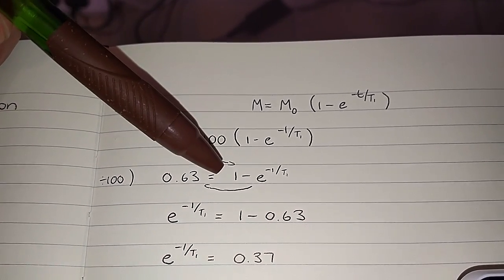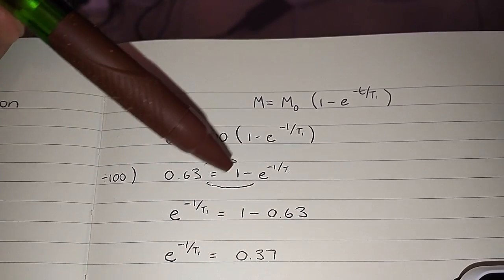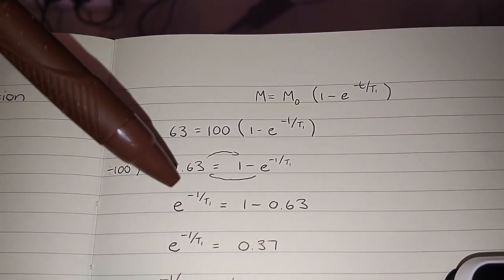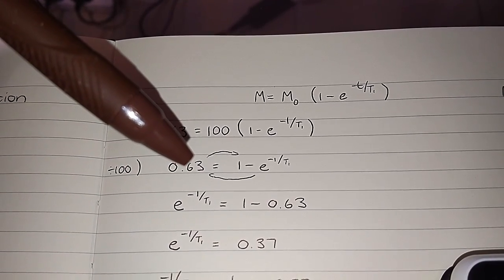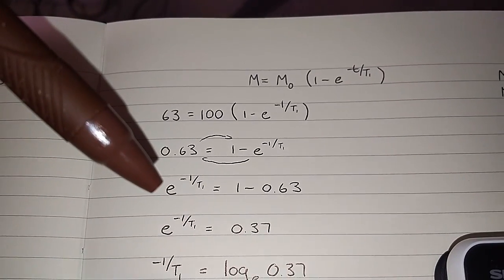And then it takes the brackets away so that I've got the 1 minus e on the one side. Over here I then did a little bit of a swap over, so I took the e over towards the left, so the negative became positive, and the 0.63 goes over to that side becoming a negative. So we end up with this over here.